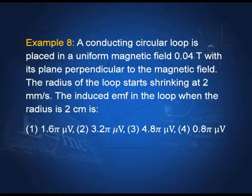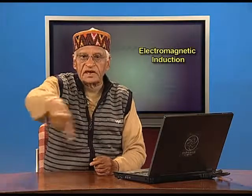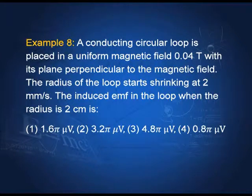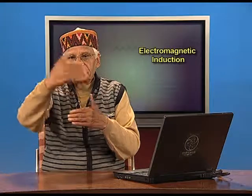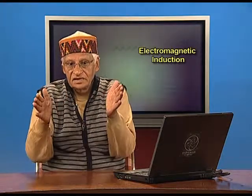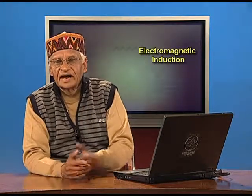Example 8: a conducting circular loop is placed in a uniform magnetic field of strength 0.04 T with its plane perpendicular to the magnetic field. The radius of the loop starts shrinking at the rate of 2 mm/s. From Faraday's law, one of the derived expressions applies when the area is changing, as the loop here is shrinking. We shall apply that expression to find the induced EMF.